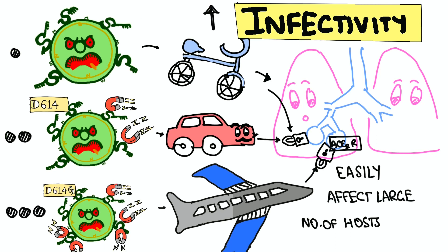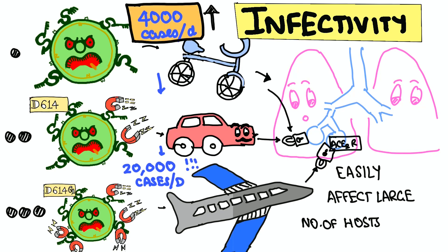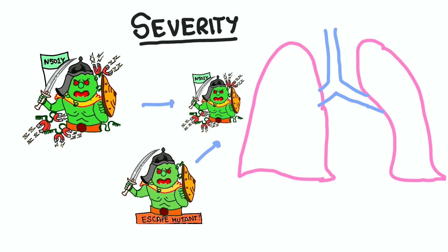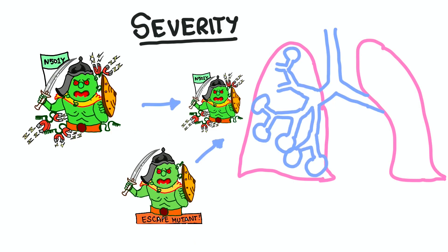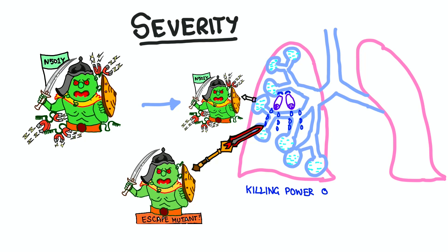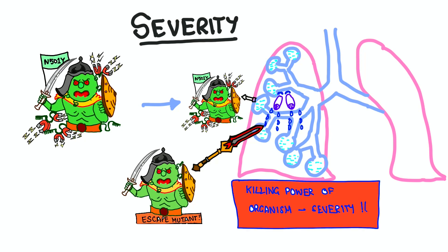The variants are increasing the power of infectivity — in the first wave it was 4,000 cases per day, and recently it was 20,000 cases per day in Delhi. Regarding disease severity — the ability of an organism to cause severe cases among infected individuals — with available trial results, not much data is available on whether recent COVID variants are significantly more virulent.